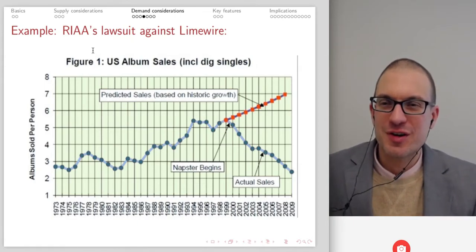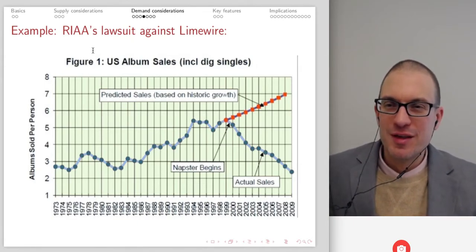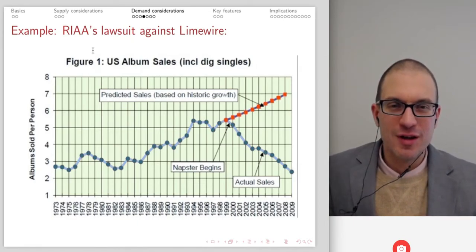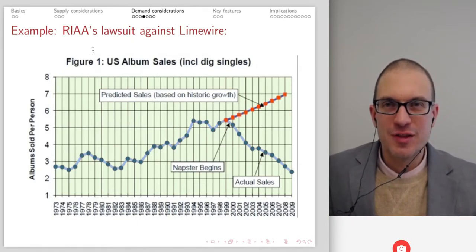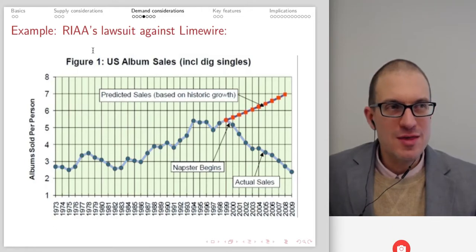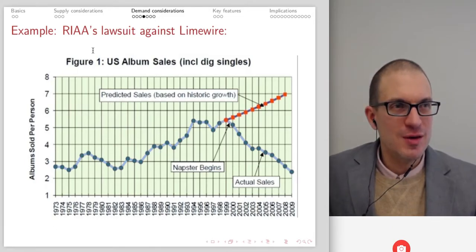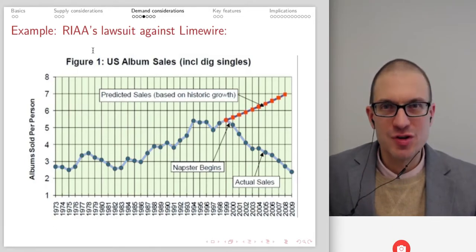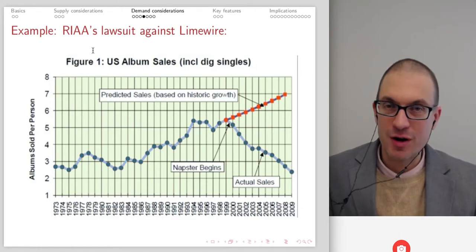Here's another example of how information and the ability to make digital copies has transformed lots of markets — this is going to allow us to explore the relationship between three or even four related markets.